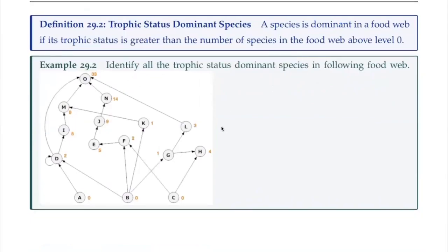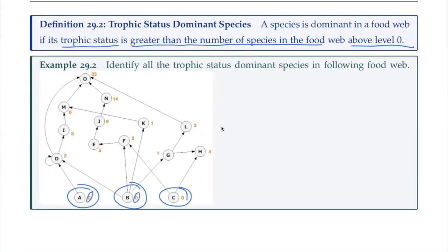The other definition we're going to look at for dominant species is something called trophic status dominant species. We say that a species is dominant if its trophic status — which we calculated last time — is greater than the number of species in the food web above level zero. Remember, level zero is going to be our primary producers; in this case, A, B, and C, which have trophic status zero. So we want to count all the other species in the food web that don't have trophic status zero, or alternatively count every species and subtract the number that have trophic status zero — subtract all the primary producers.